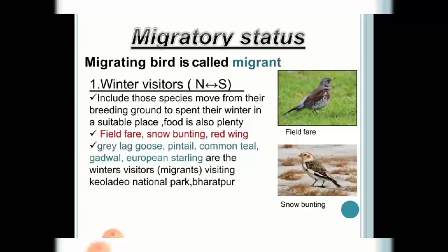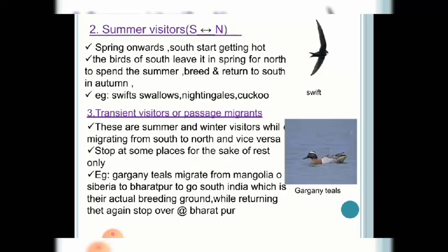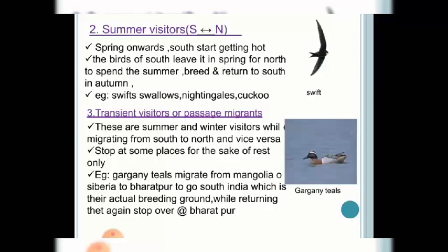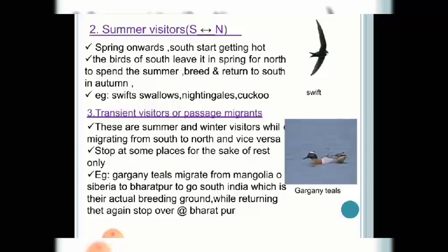The second migratory status is summer visitors. Once spring starts and the south begins to get hot, birds tend to move towards the northern hemisphere. These birds leave the south once spring starts and move north to spend their summer. Once the north gets cold again, they move towards the south during autumn. Examples are swift and swallows.